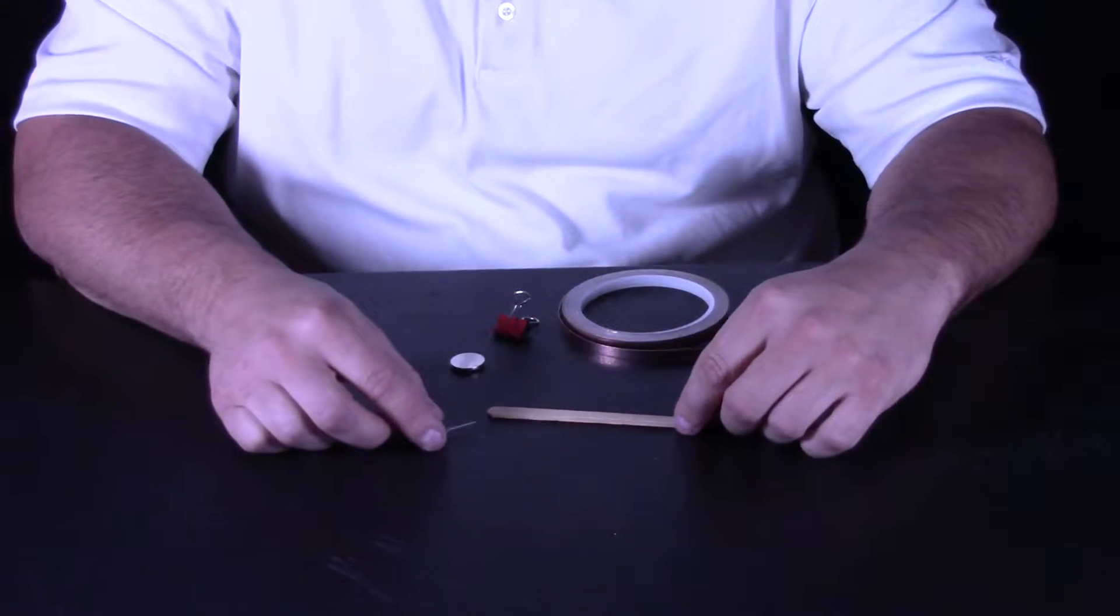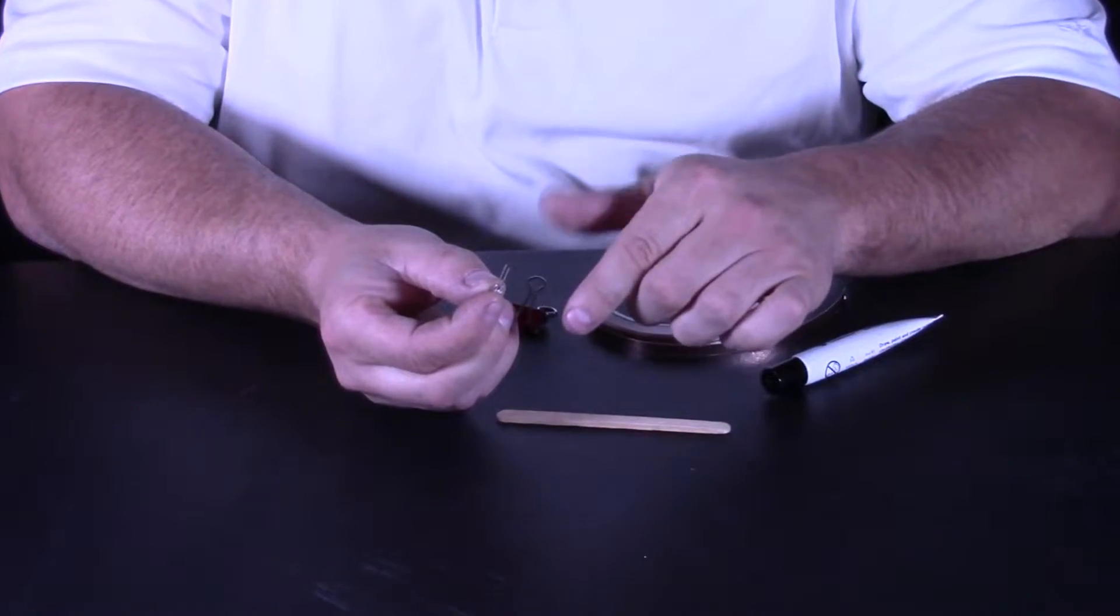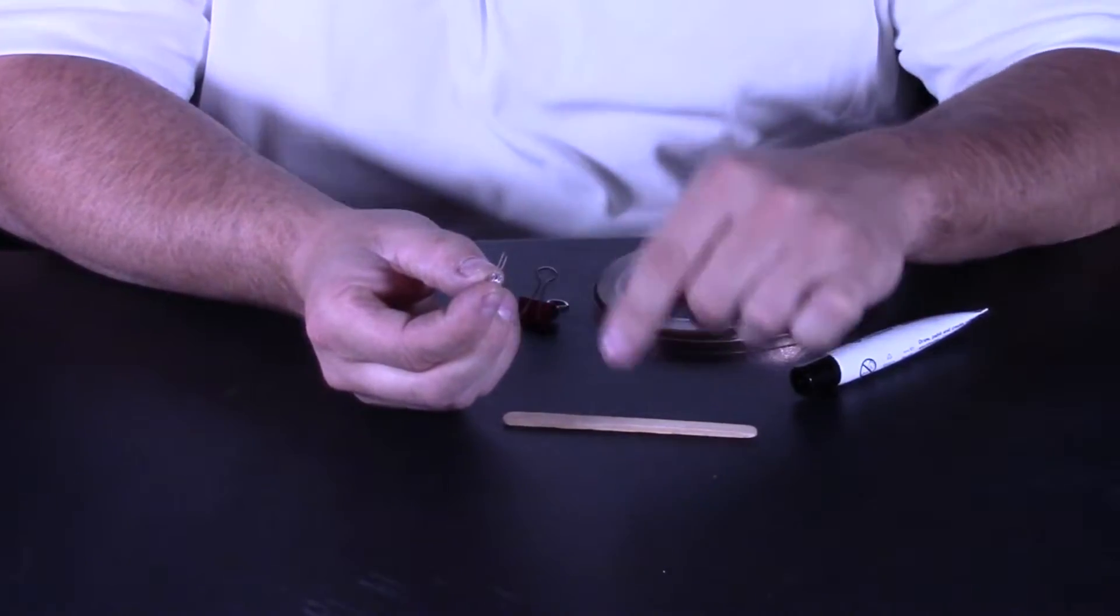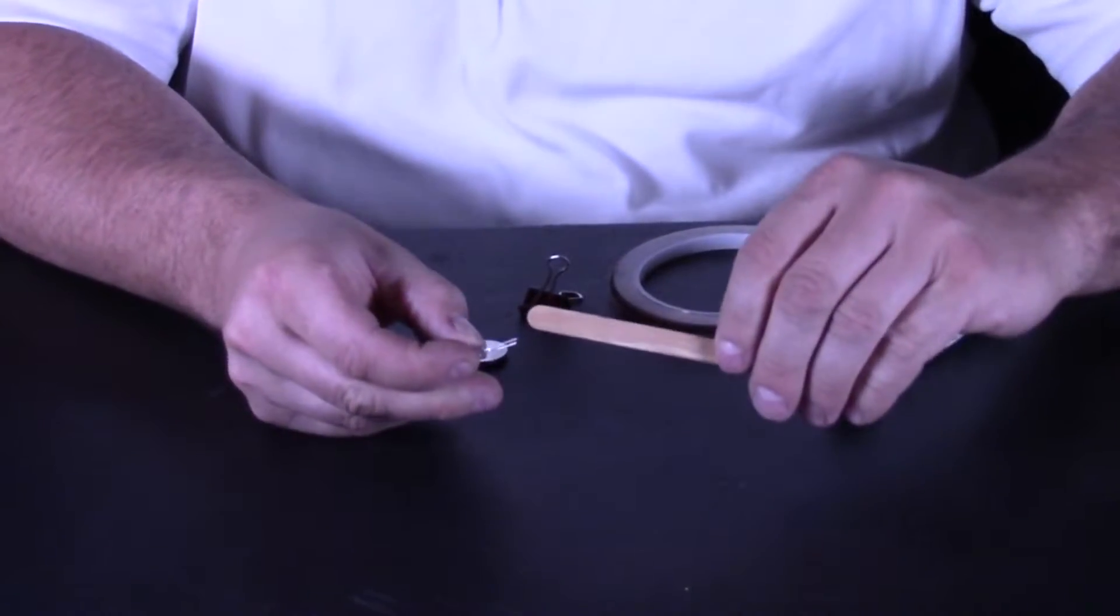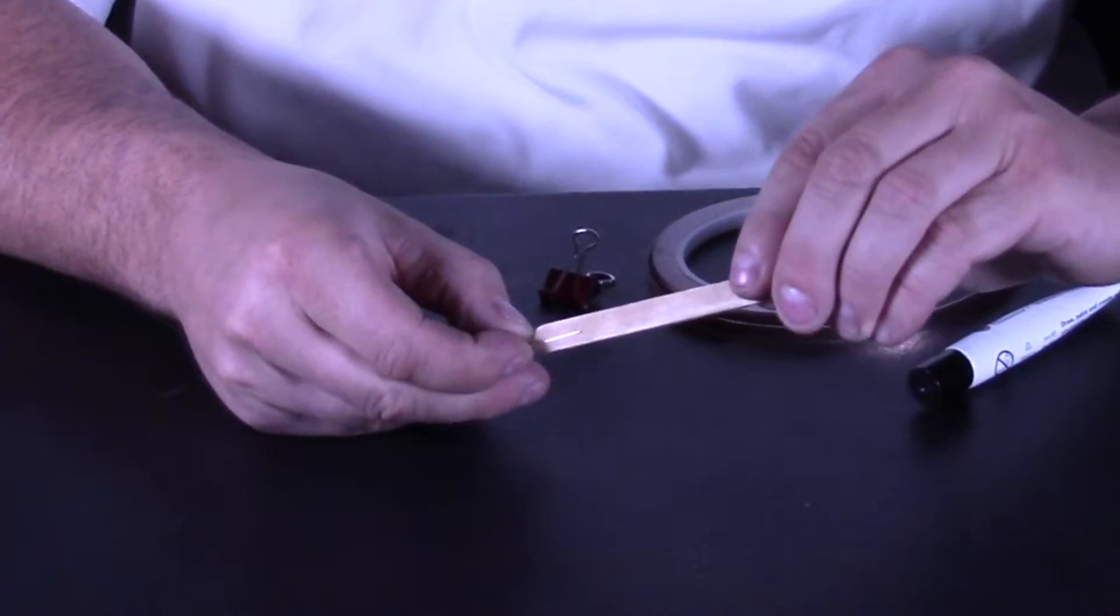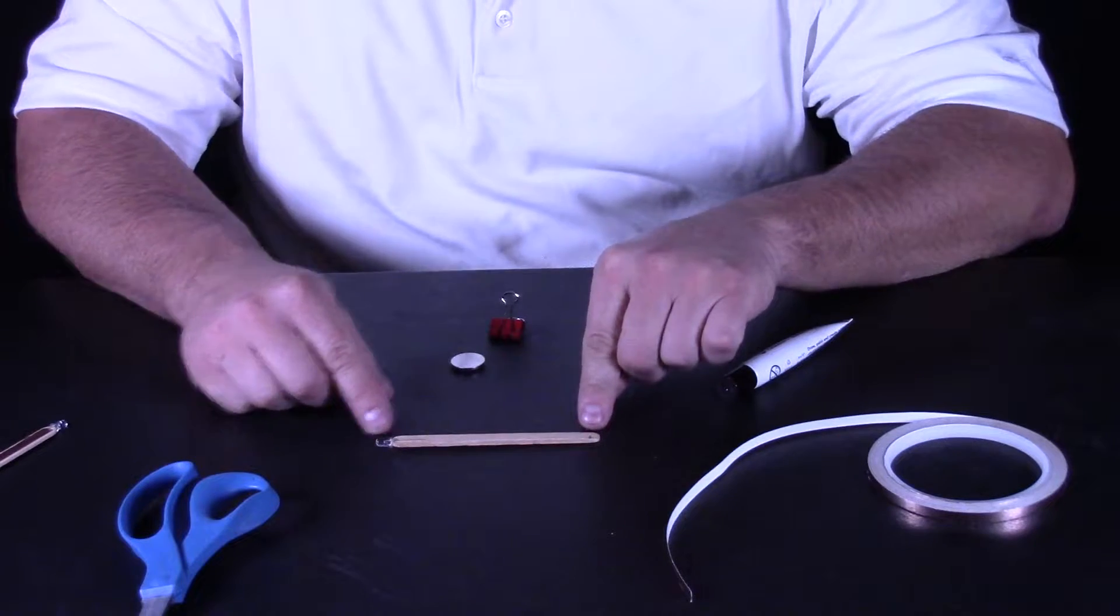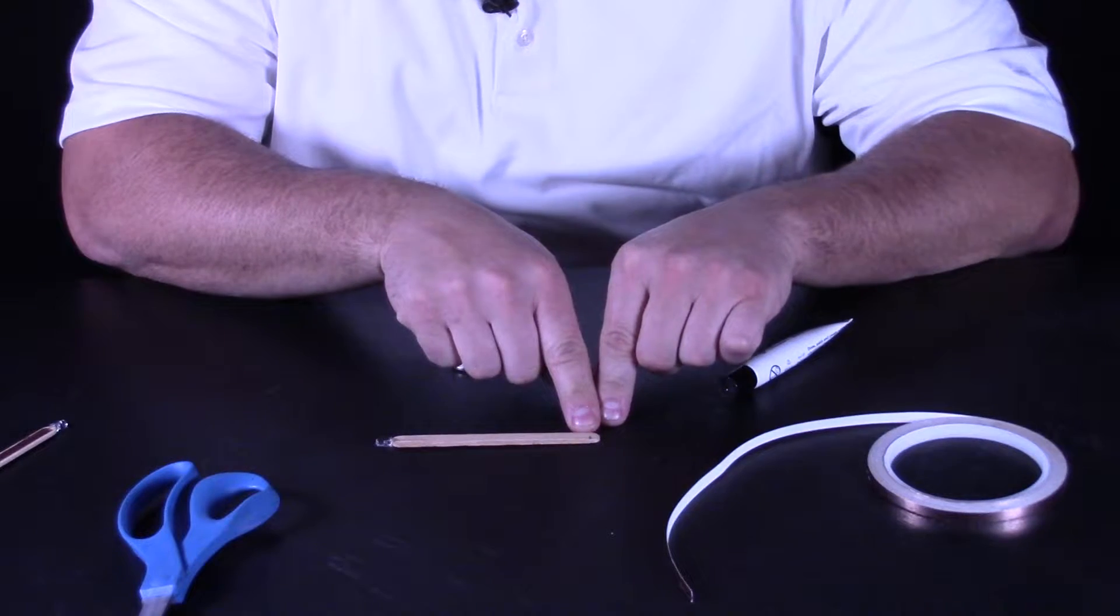The first step is to attach our light bulb. Now keep in mind with an LED light, one of the wires is longer than the other one. You need to make sure you know which side that is because the longer one is our positive side. So I'm going to slide this over the top of a popsicle stick. I need to make sure I keep track and remember that this is the positive side, so I just put a little plus sign.